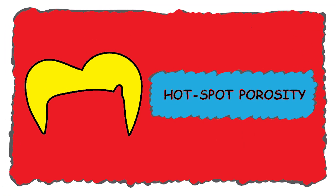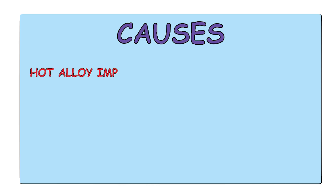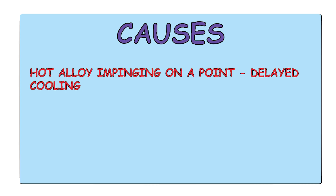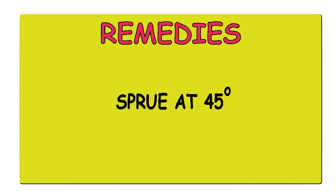The next porosity is the hot spot porosity. It is caused by the impinging of molten metal or molten alloy on the wall of the mold. Because of this impact, the temperature of the mold wall rises and the metal here solidifies later than the metal adjacent to this spot. It is usually caused because the sprue is attached at a 90 degree angle to the wax pattern. Hot spot porosity can be prevented by attaching the sprue at a 45 degree angle to the wax pattern.